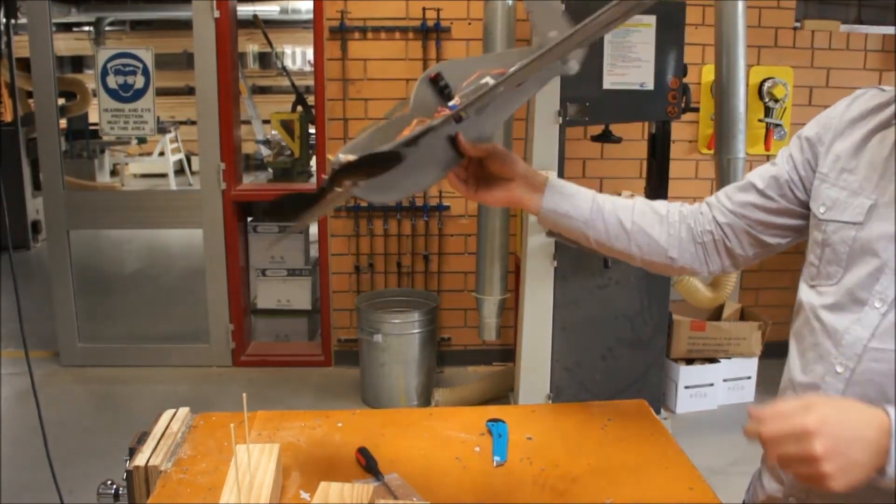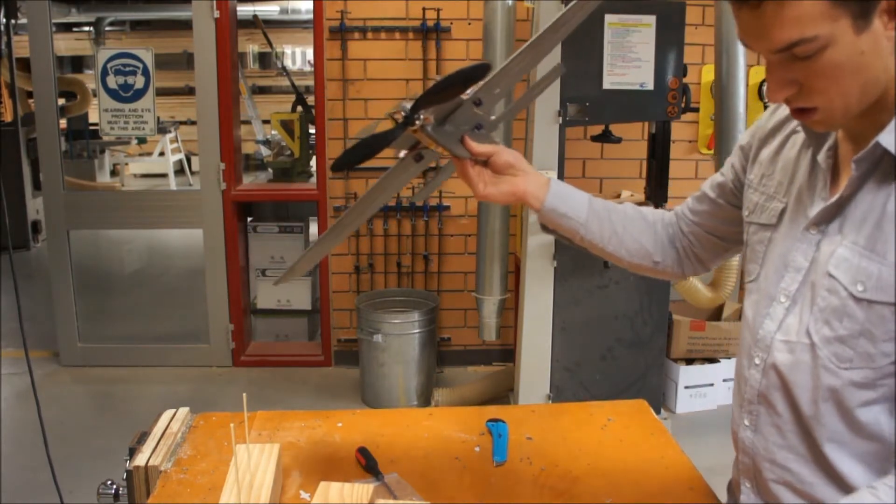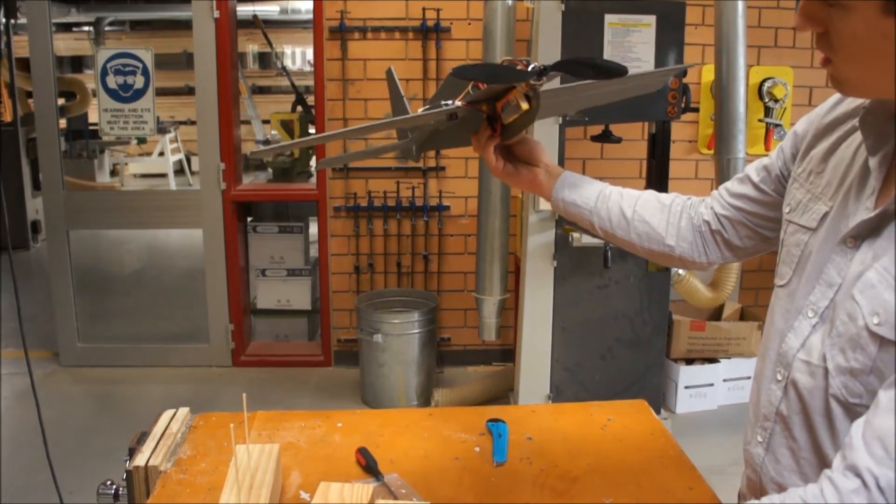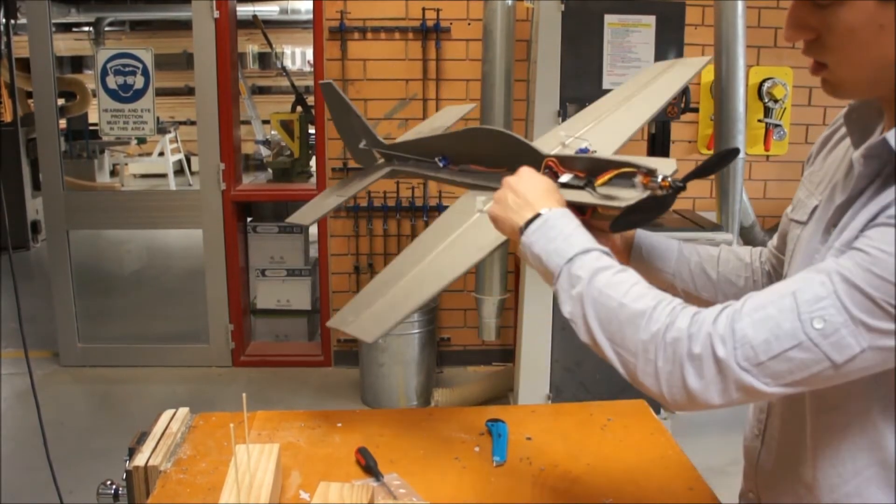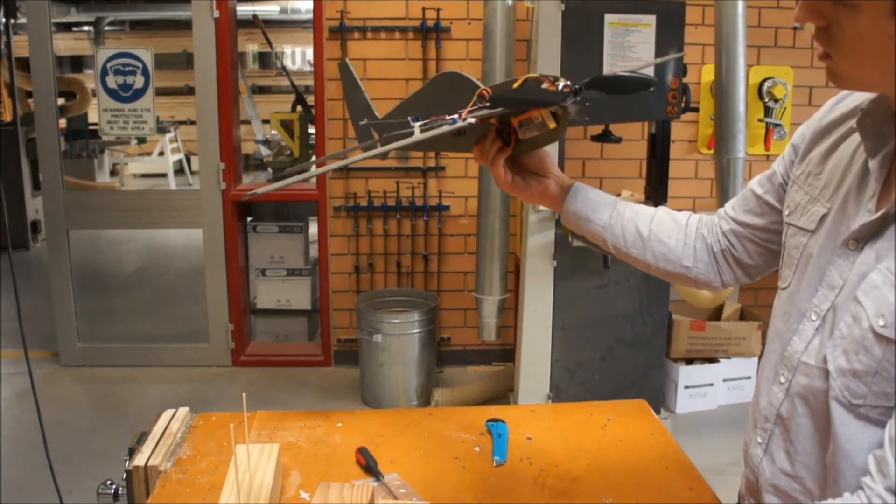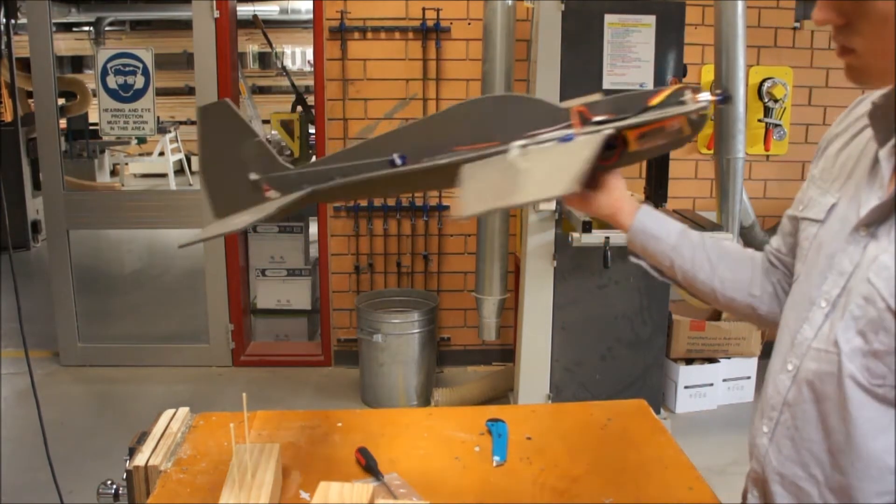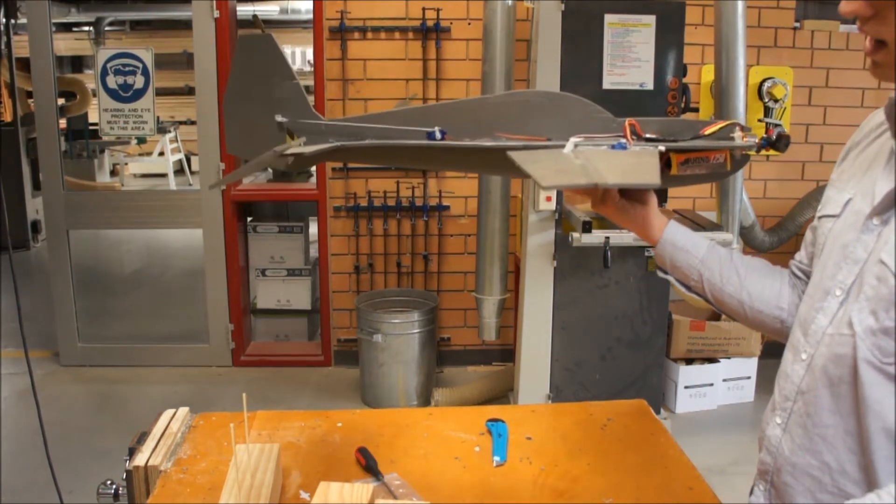Everything's nice and strong and sturdy. And if I use the controller, I can just do another test. And just test that we've got full movement, because that's what happened to this servo. It just had only half of the movement that it should have. Full movement, both directions on the ailerons, on the elevator and on the rudder.